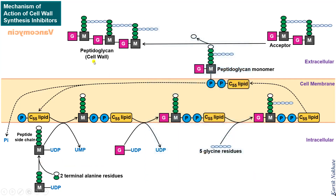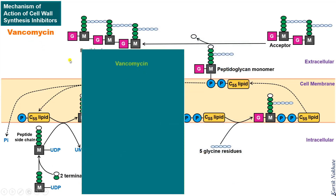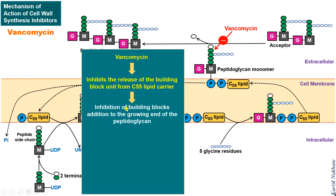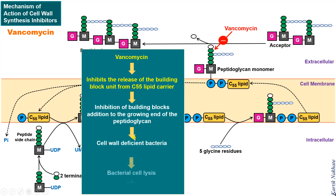The next antibiotic is vancomycin. Vancomycin inhibits the release of a peptidoglycan building block from the C55 lipid carrier. Therefore, the addition of a peptidoglycan monomer to the growing end of the peptidoglycan layer cannot occur. This ultimately results in the formation of a cell wall deficient bacterial cell.